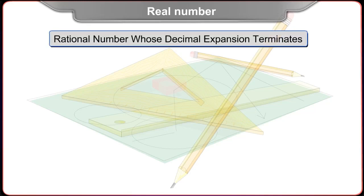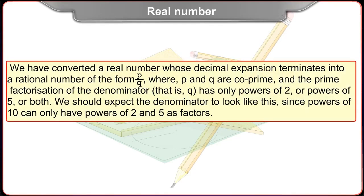We have a rational number whose decimal expansion terminates. We have converted a real number whose decimal expansion terminates into a rational number of the form P upon Q, where P and Q are co-prime, and the prime factorization of the denominator Q has only powers of 2 or powers of 5 or both. We should expect the denominator to look like this, since powers of 10 can only have powers of 2 and 5 as factors.